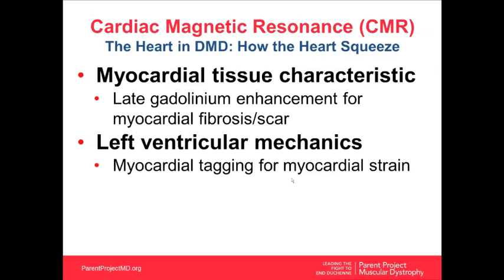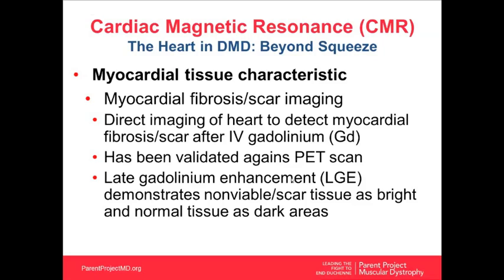We want to know if there are ways to look at DMD-associated heart disease beyond squeezing to detect what's going on earlier. I'll concentrate on two main things: first, myocardial tissue characteristics — late gadolinium enhancement (LGE), a way to look at myocardial fibrosis or scar in the heart; second, left ventricular mechanics using a technique called myocardial tagging to look at myocardial strain. LGE demonstrates non-viable scar tissue as bright areas and normal tissue as dark areas.